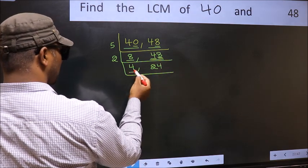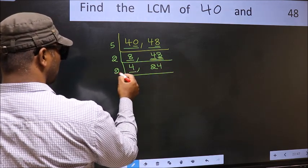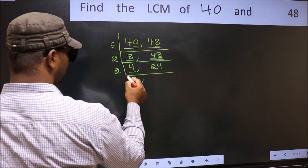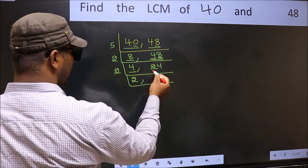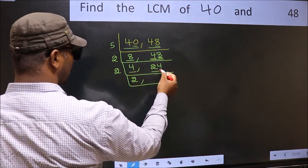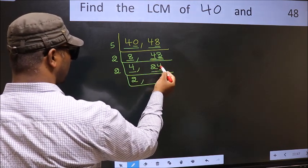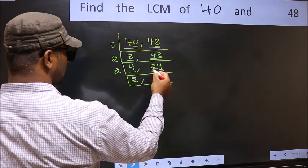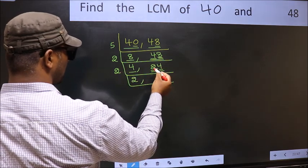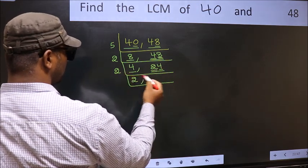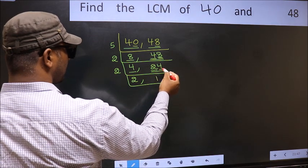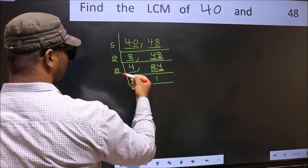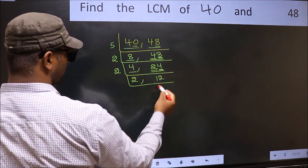Now here we have 4. 4 is 2 twos — 2 times 2 is 4. The other number is 24 — last digit 4 is even, so this is divisible by 2. The first number gives 2; when do we get 2 in the 2 table? 2 ones are 2. The other number gives 4; when do we get 4 in the 2 table? 2 twos are 4.